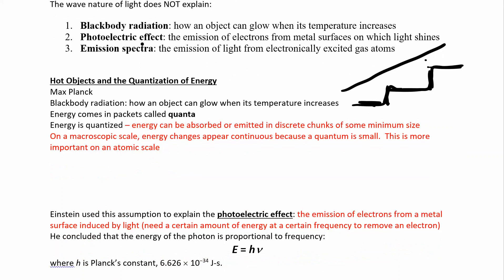The photoelectric effect, this was Einstein. Einstein used the assumption about the quantization of energy to explain the photoelectric effect. And this is when you have a metal and you shine some light on it, you kick some electrons off. So it's the emission of electrons from a metal surface that's induced by light.